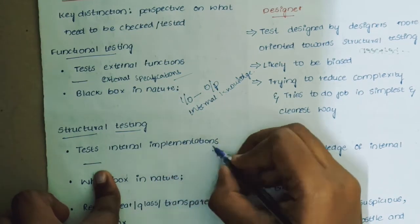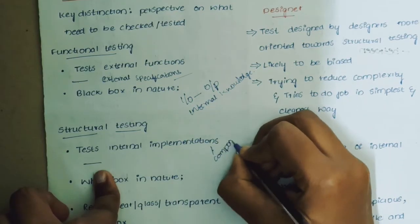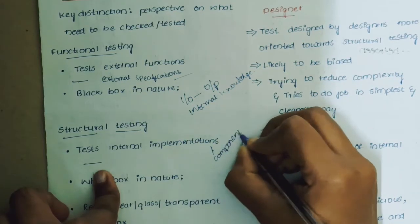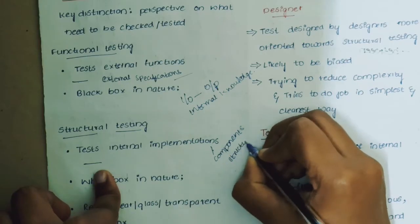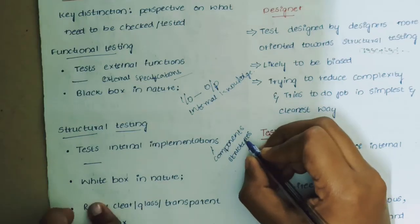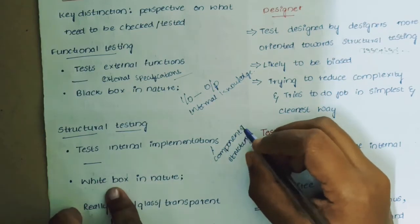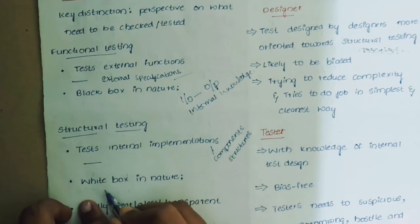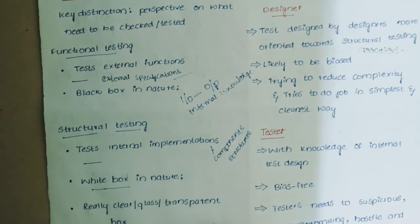Structural testing tests internal implementations — that is, the internal components and structures are tested. In functional testing it is black box in nature, while in structural testing it is white box in nature, also described as a clear or transparent box.